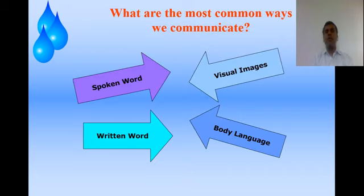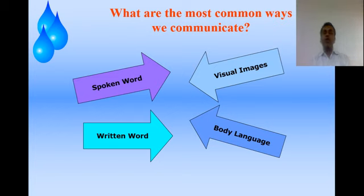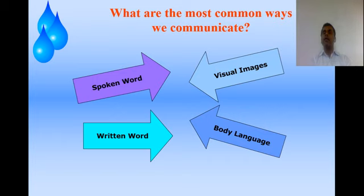Moving to the next one, we are going to see what are the common ways that we communicate and how communication is done exactly. For the purpose of communication, we speak some words, sometimes we use images, sometimes we write letters or everything we want to communicate in written form, and sometimes we go for use of body language. I am going to explain these four ways of communication that we regularly use in our day-to-day life.